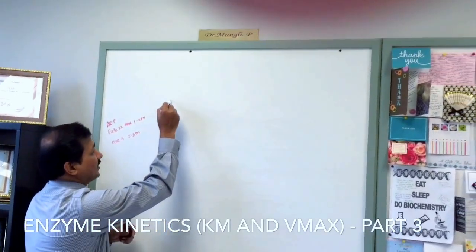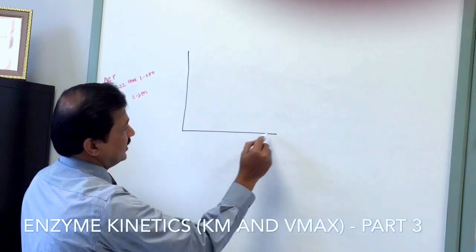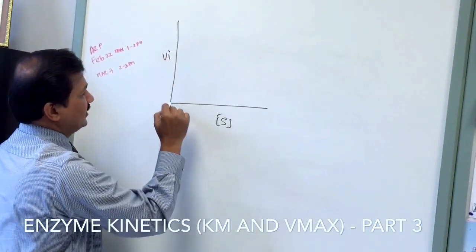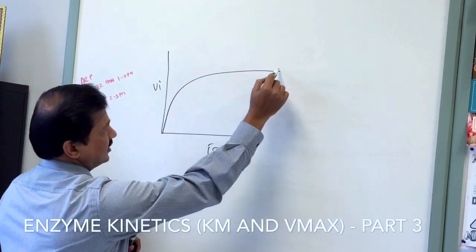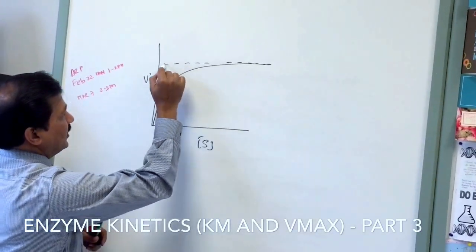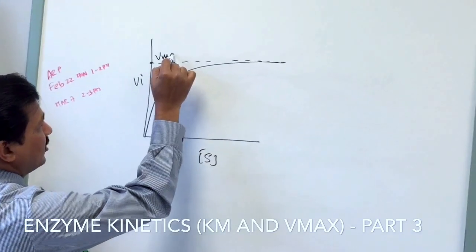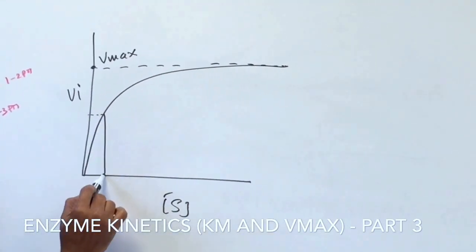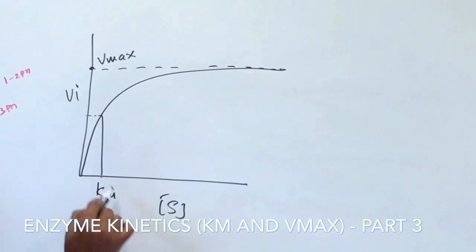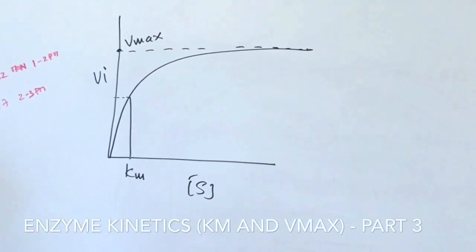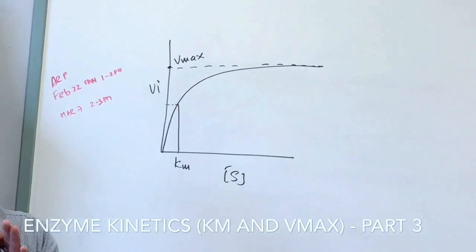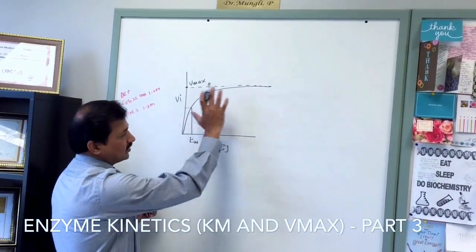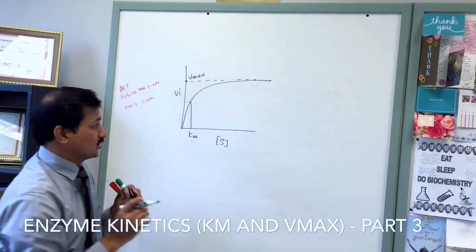The Michaelis-Menten plot has substrate concentration on the x-axis, initial velocity on the y-axis, and then you get a saturation curve. This point here is Vmax, the maximum velocity of the reaction. Half of the Vmax gives you Km, the substrate concentration at which the enzyme reaches half the maximum velocity. This is how the Michaelis-Menten plot goes.